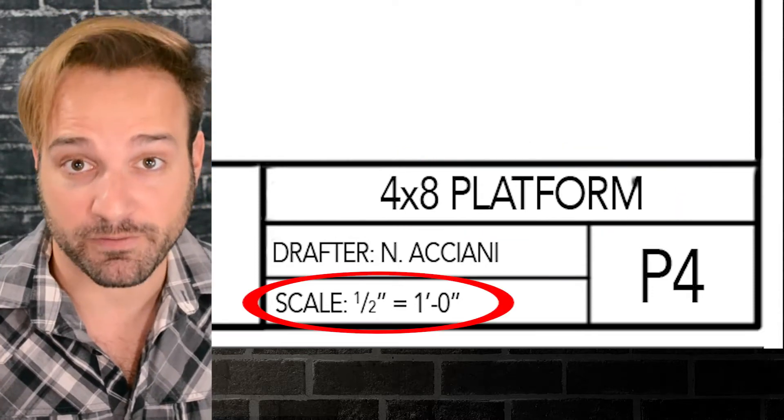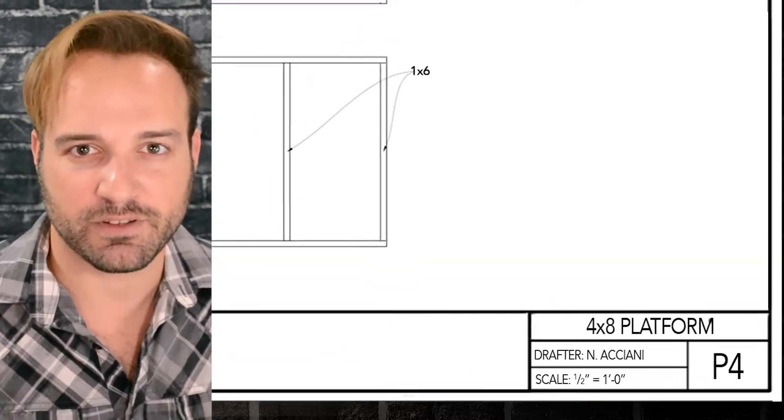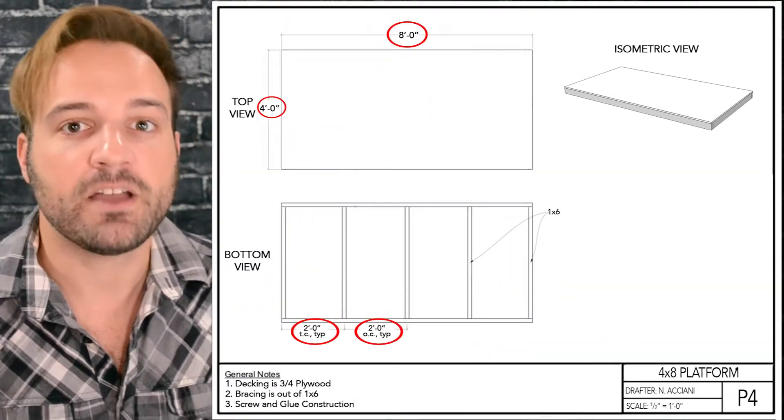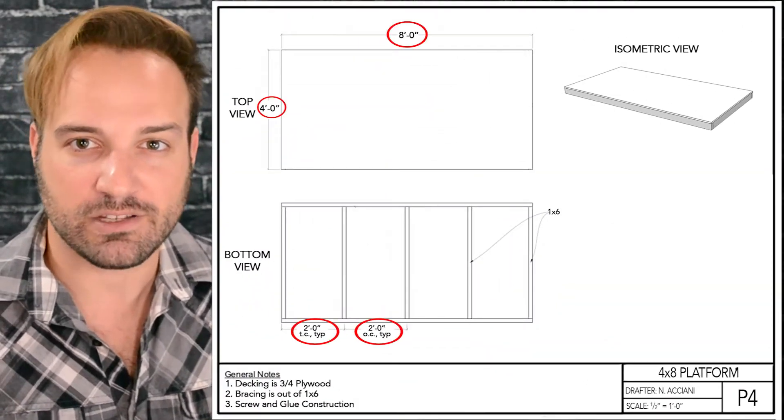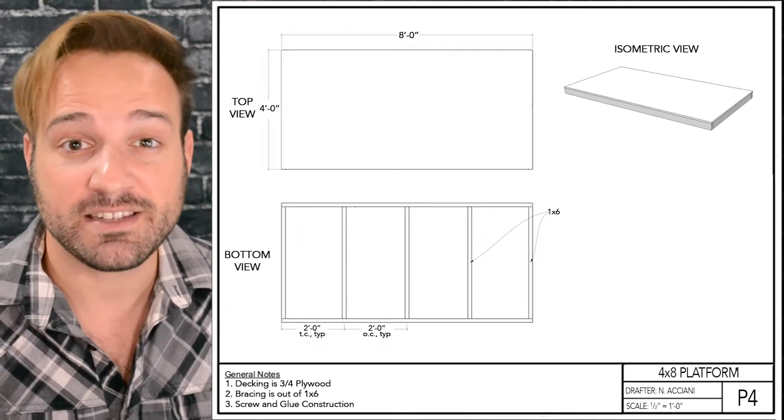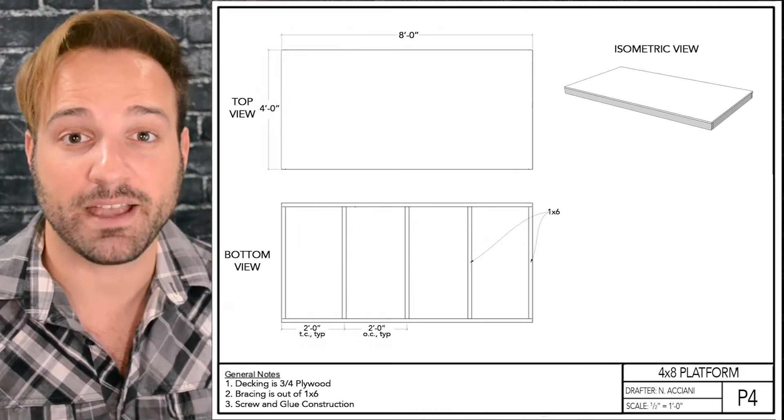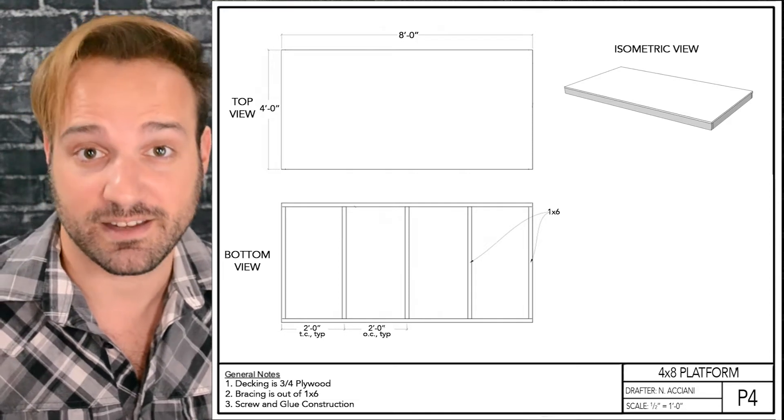This happens to be in half inch equals one foot scale. If you look at the rest of the drafting, there are measurements on there, but you may not get all of the measurements that you need. So knowing the scale means you can take out your scale ruler and figure out exactly how big everything should be if it has been drafted in scale.